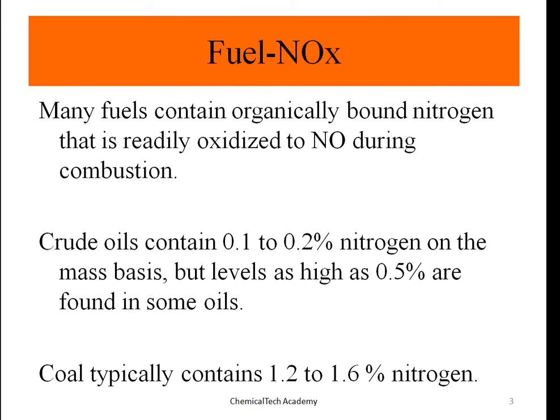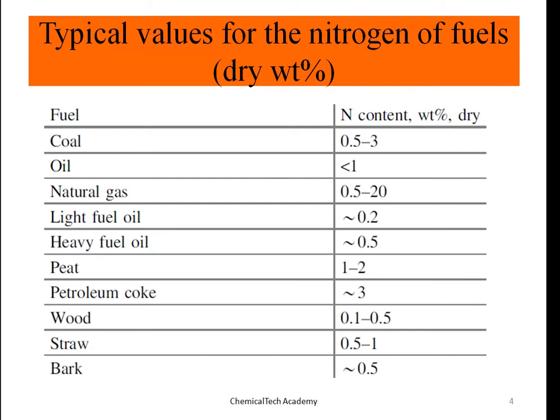Coal typically contains 1.2 to 1.6% nitrogen. As shown in this slide, the nitrogen content of different fuels in terms of dry weight percent: coal is 0.5 to 3%, oil is less than 1%, and natural gas is 0.5 to 20%.